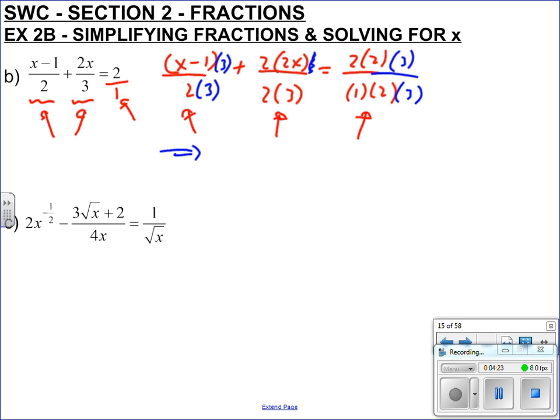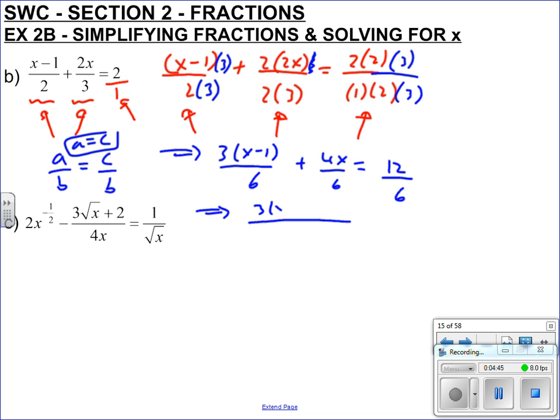So simplifying we get 3x take 1 over 6, plus 4x over 6, is 2 times 2 times 3 is 12 over 6. So they've all got the common denominator. Remember that fact: a over b equals c over b, therefore a must equal c.